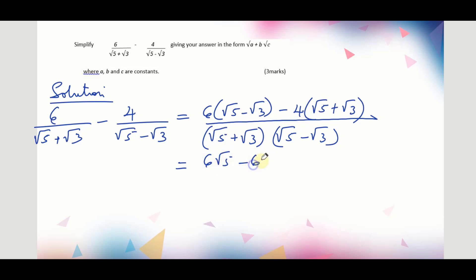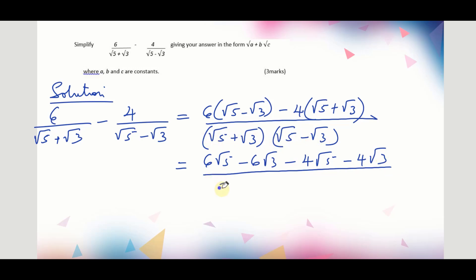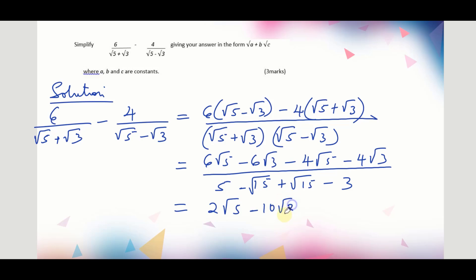Opening the brackets in the numerator we get 6√5 − 6√3 − 4√5 − 4√3, everything divided by the expanded denominator: 5 − √15 + √15 − 3. Simplifying the like terms in the numerator gives us 2√5 − 10√3, all divided by 5 − 3, which equals 2.